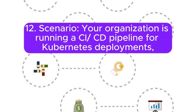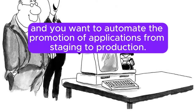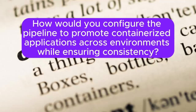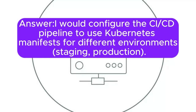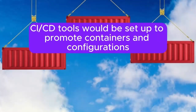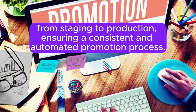Scenario 12: Your organization is running a CI/CD pipeline for Kubernetes deployments, and you want to automate the promotion of applications from staging to production. How would you configure the pipeline to promote containerized applications across environments while ensuring consistency? Answer: I will configure the CI/CD pipeline to use Kubernetes manifests for different environments — staging and production. Deployments would be orchestrated using tools like Helm or kubectl. CI/CD tools would be set up to promote containers and configurations from staging to production, ensuring a consistent and automated promotion process.